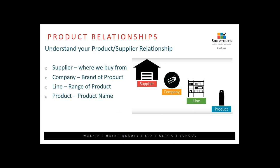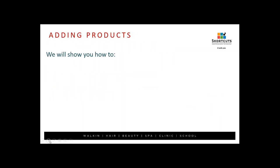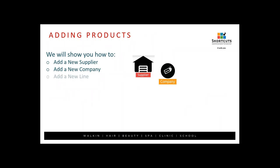The line is a range of products — for example, a particular styling range or cleansing range. The product is then the individual product name. So wherever we reference these throughout the webinar, it's always useful to know exactly what each of these means. Now we're going to walk through how to add a new supplier, a new company, a new line, and a new product.